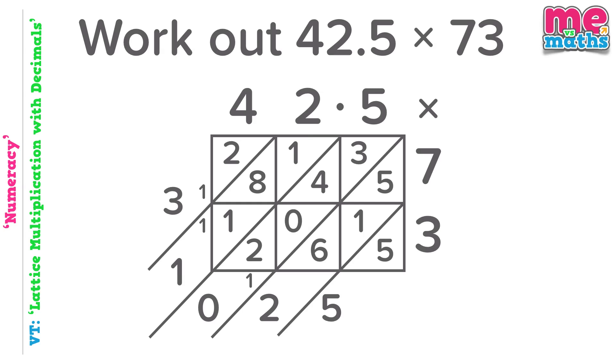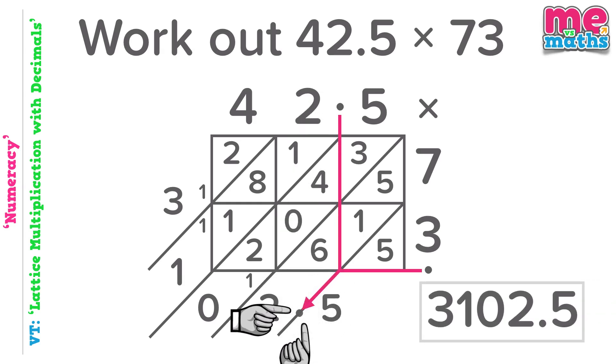And finally, 42.5 times 73. Like our first example, 73 is a whole number and does not have a decimal point in it. So think of it as 73.0, in which case the point needs to go after the three there. Again, down from the top, across from the side until they meet. Follow that diagonal down to see where the point should go. Obtain our final answer, 3102.5.